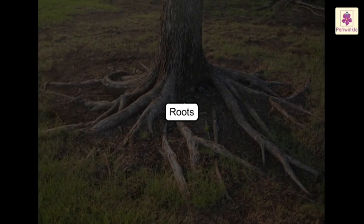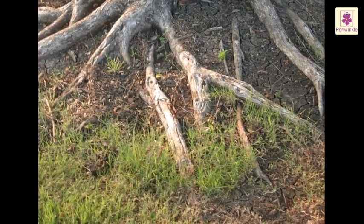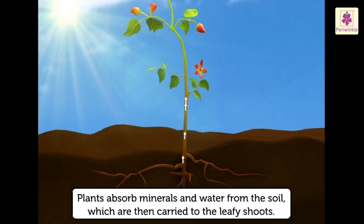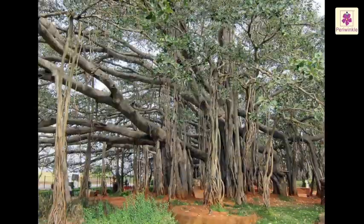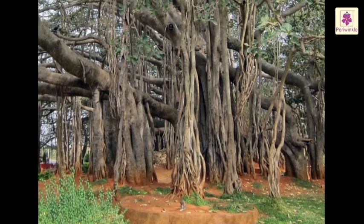Roots. Plants have roots which spread through the soil and hold them firmly in the ground. Roots mostly grow under the ground. Plants do not have to search for food — they can spend their entire life rooted in one place. They absorb minerals and water from the soil, which are then carried to the leafy shoots. Roots also prevent the plant from being blown away by the wind.